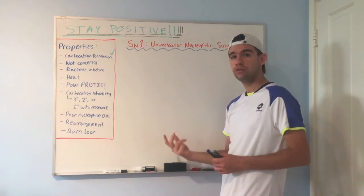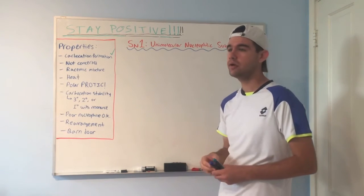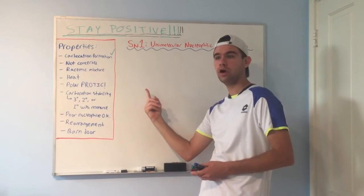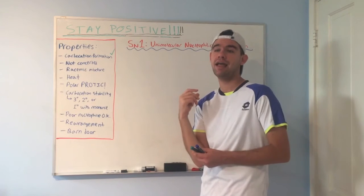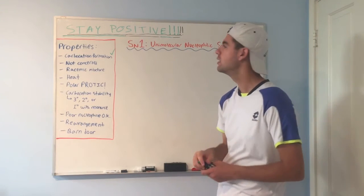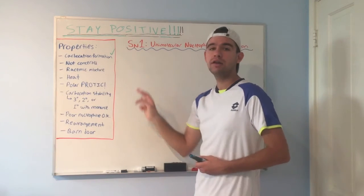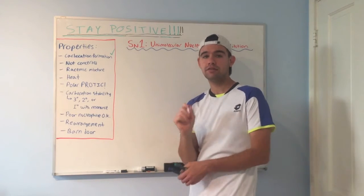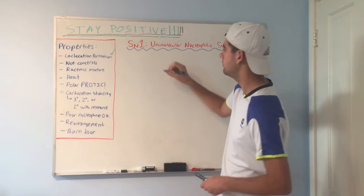So what do I mean by that? SN2 reactions, we learned in the previous video, are concerted. They happen. The nucleophile attacks the electrophilic carbon, and the leaving group leaves in one step, all in one. So SN1 is different. We saw that the leaving group leaves first. That's its own step. In fact, that's the rate-determining step. I should write that down.